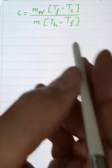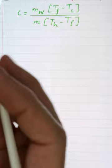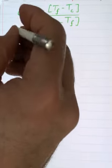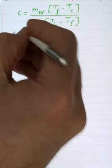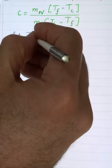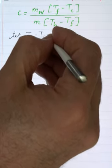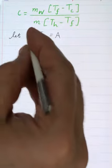I will show you. Of course, you can solve it in one shot, but let's simplify. So we say let T_f minus T_c to be A, and T_h minus T_f to be B.